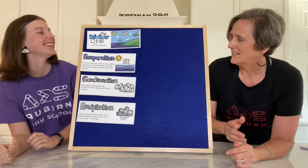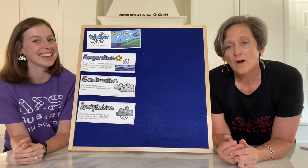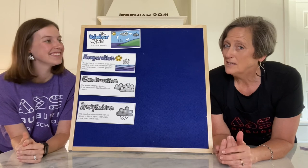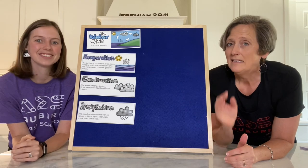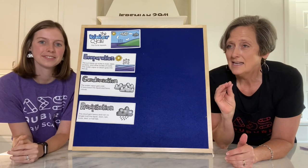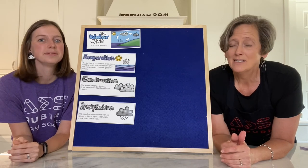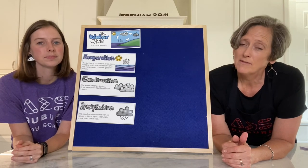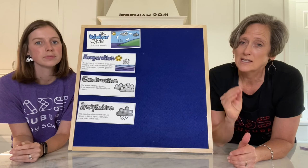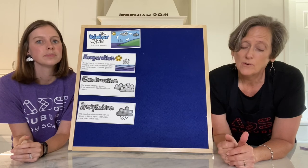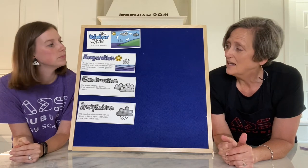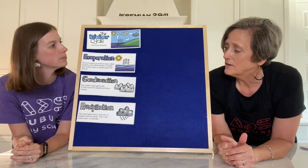So the water cycle is a pattern we don't see as easily as some of the other patterns that repeat quickly — it's kind of a slow repeater.